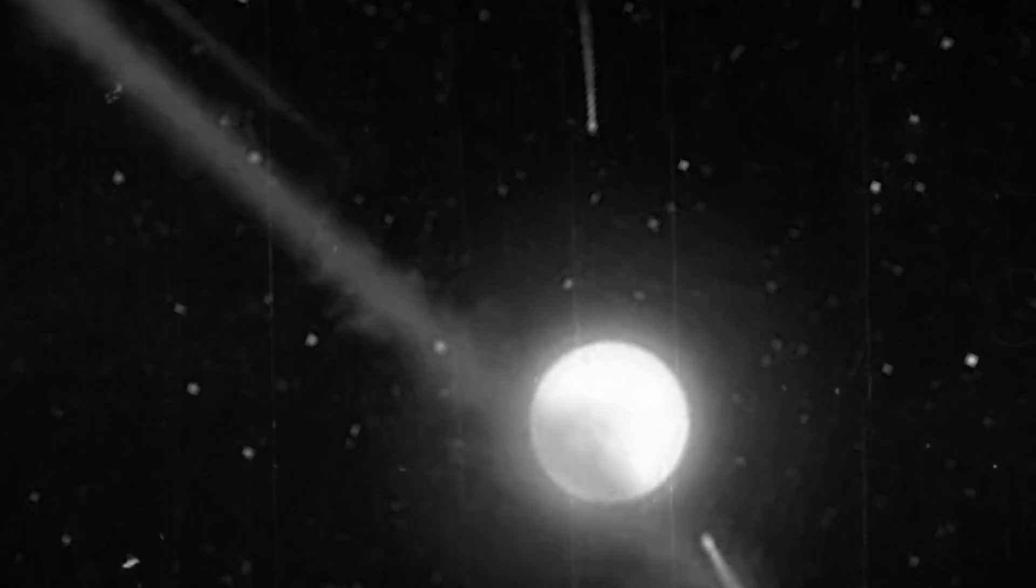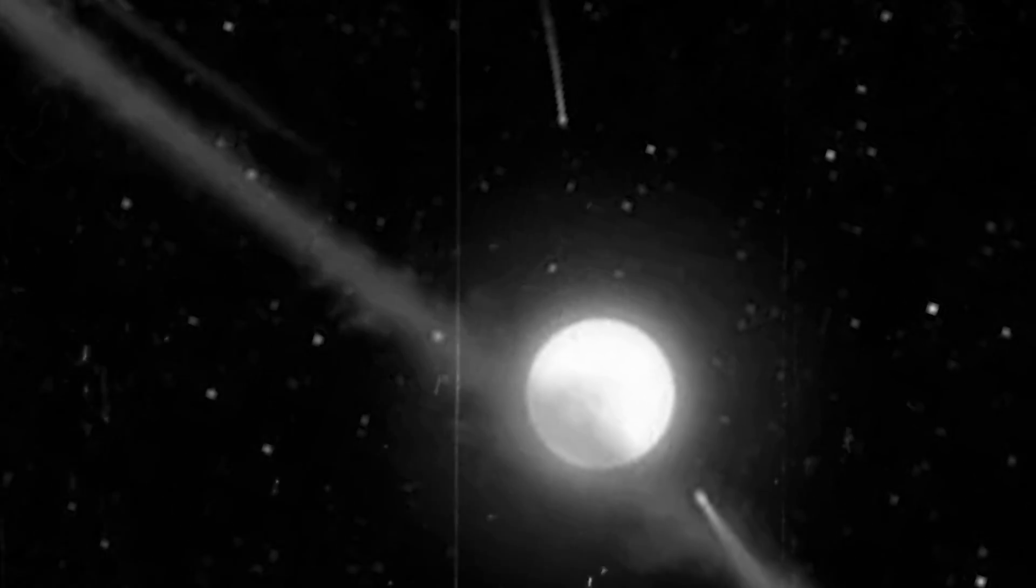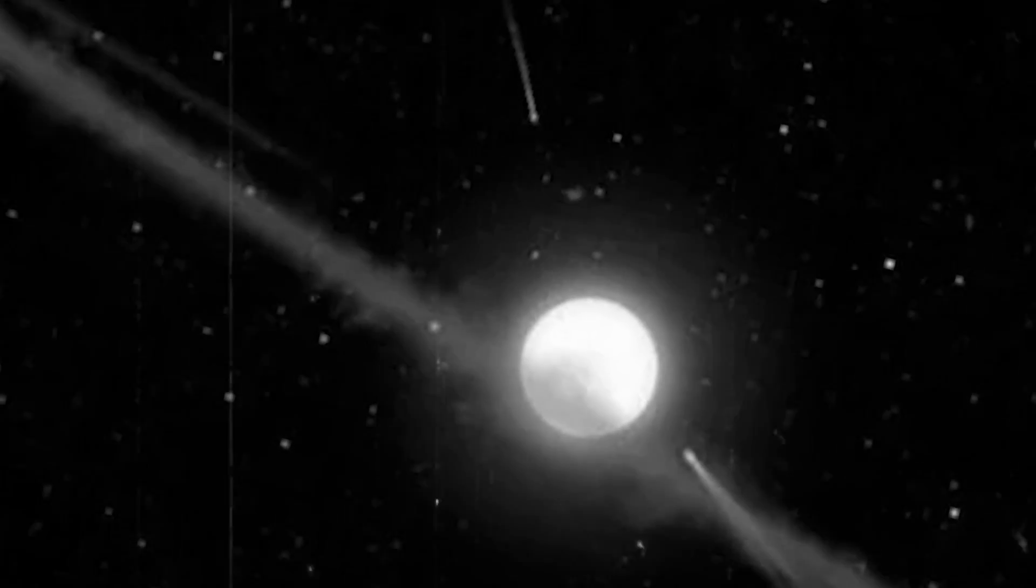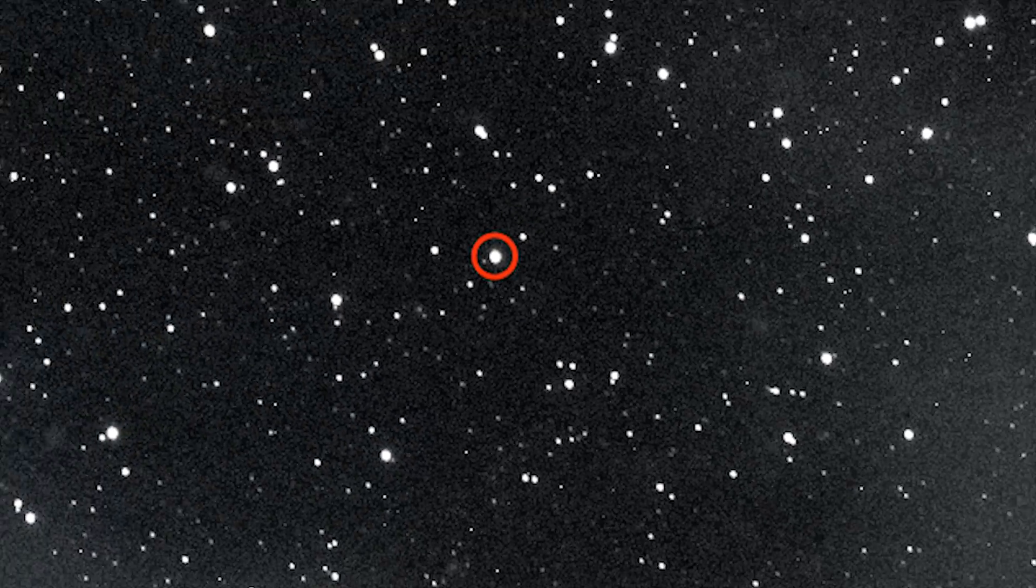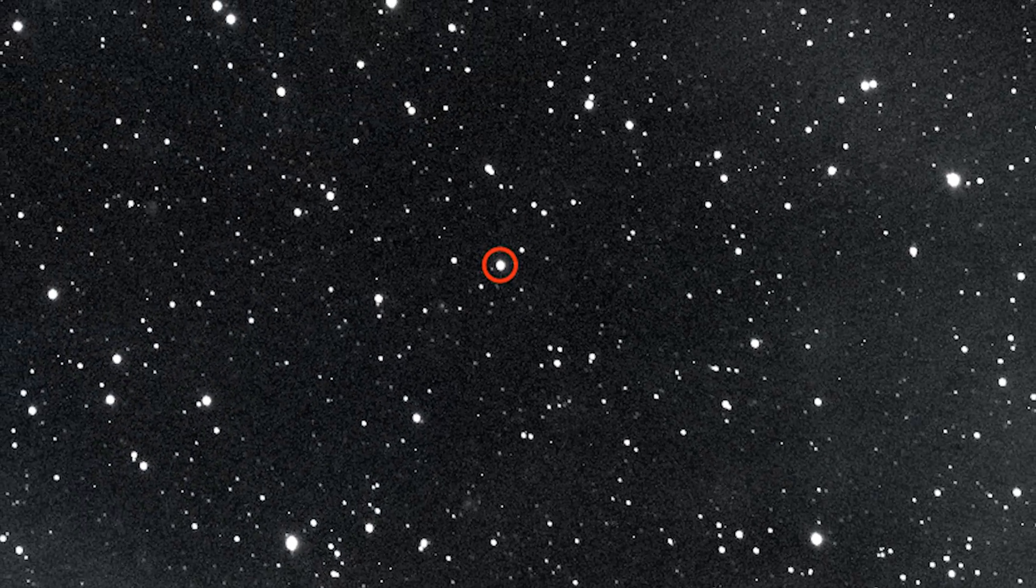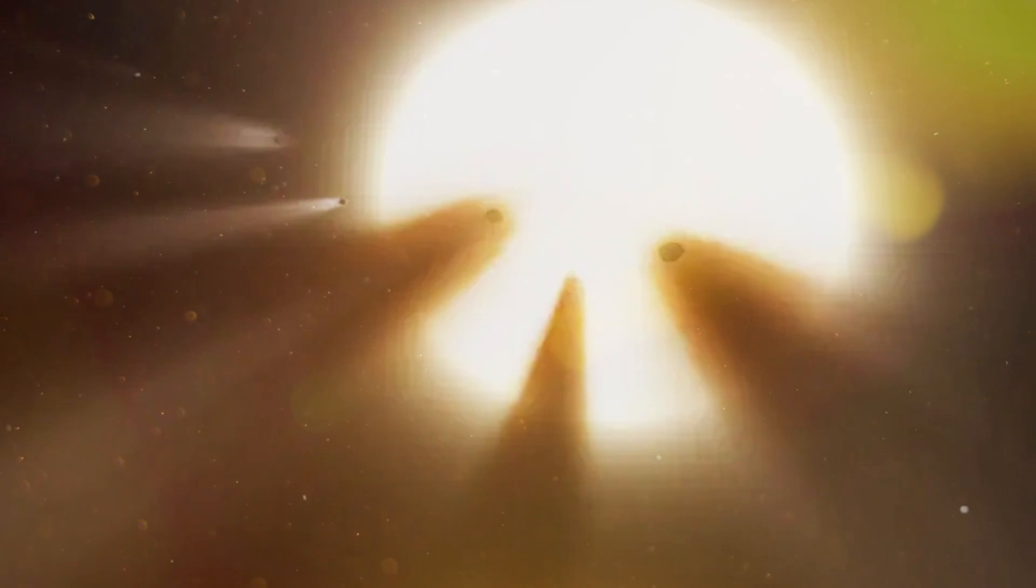The study revolves around a star known as Boyajian's Star, named after the lead author of the research. Situated about 1470 light-years away, this star became the center of attention due to some unusual observations made by NASA's Kepler telescope.